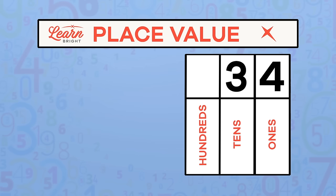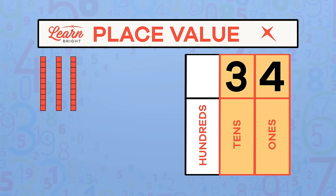If the number only has two digits, we again start with the ones column and insert the last number there. The 3 in the tens column represents three tens, or 30 in this number, and the 4 in the ones column represents four ones, or 4.